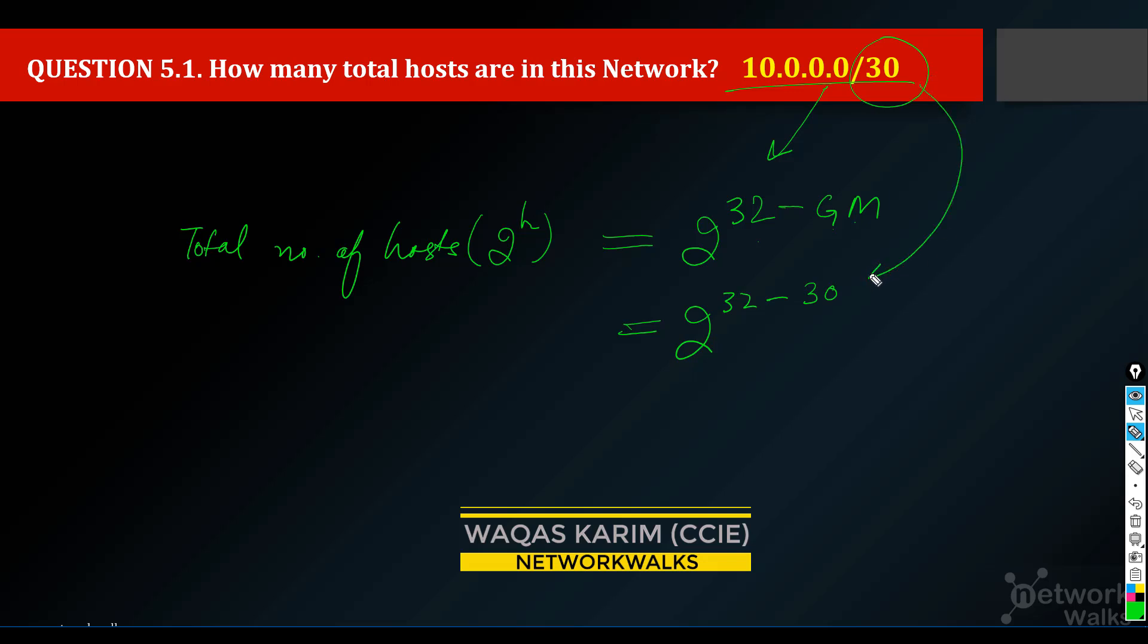The mask here is 30. So 2 raised to power 32 minus 30 will be 2. So 2 raised to power 2 is 4.